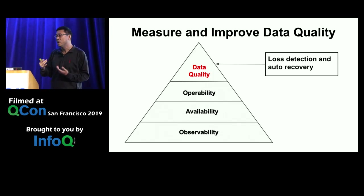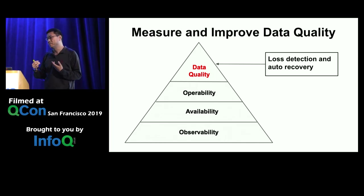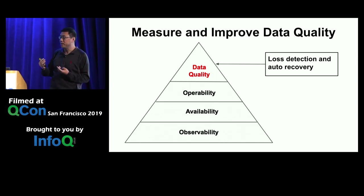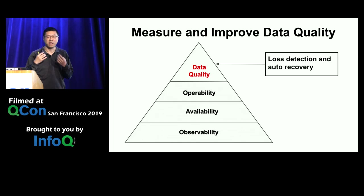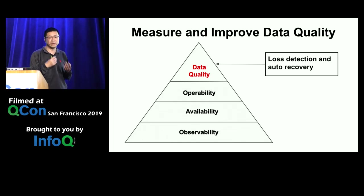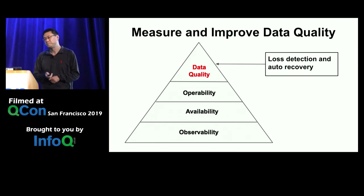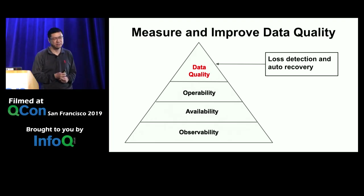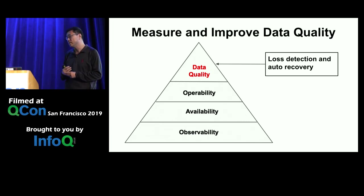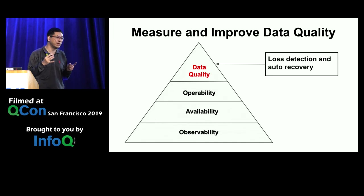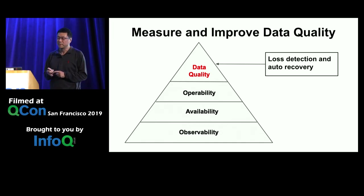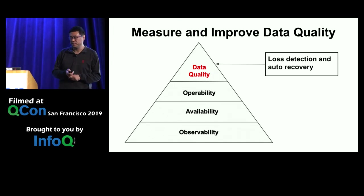Now we can get into the discussion of data quality. I want to talk about how we use loss detection to find lost messages and even auto-recover those messages to improve our data quality. I'll be focusing on data transport quality — loss rate, duplicate rate, and end-to-end latency.